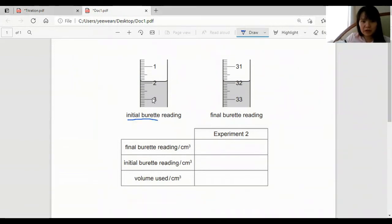So let's look at the initial burette reading. Zero is up here and each one of this is 0.1. So here is 1, this would be 1.1, 1.2 and all the way here.